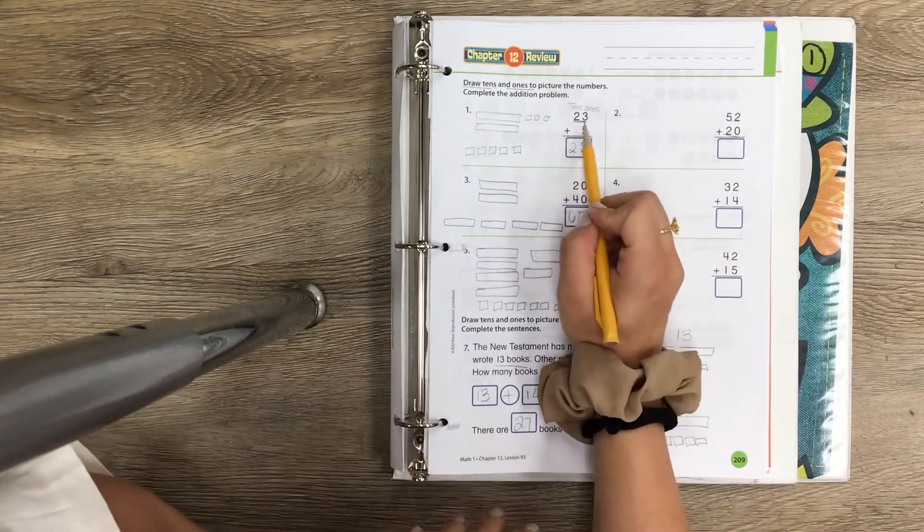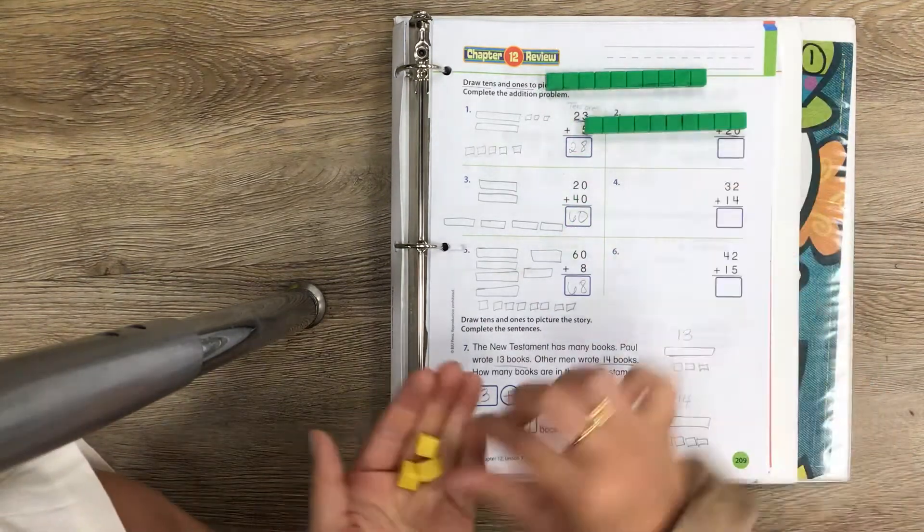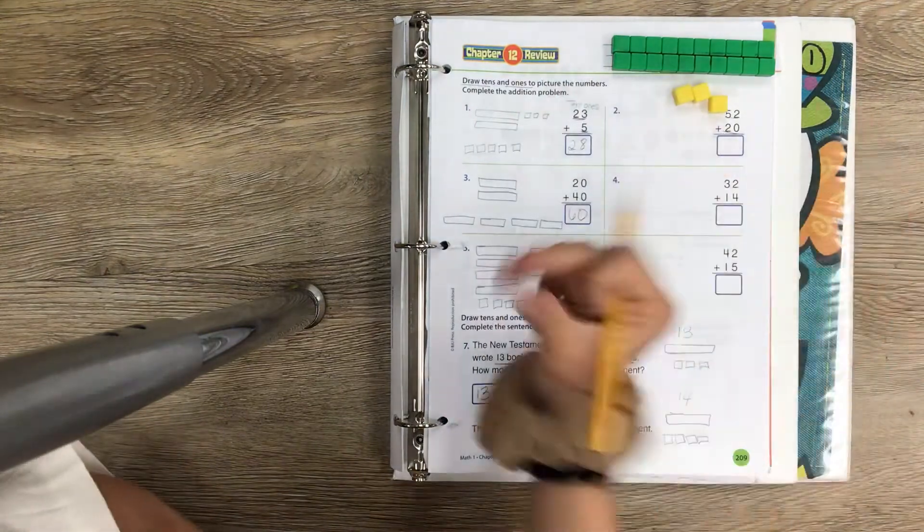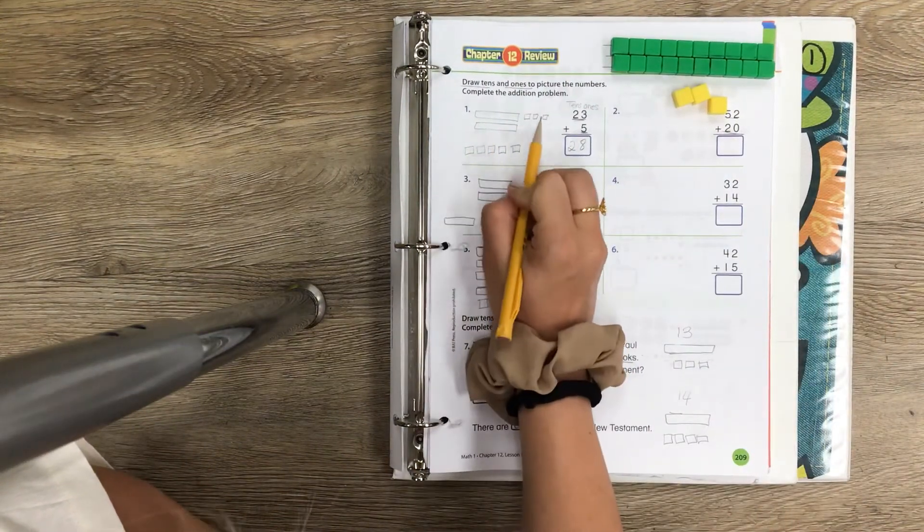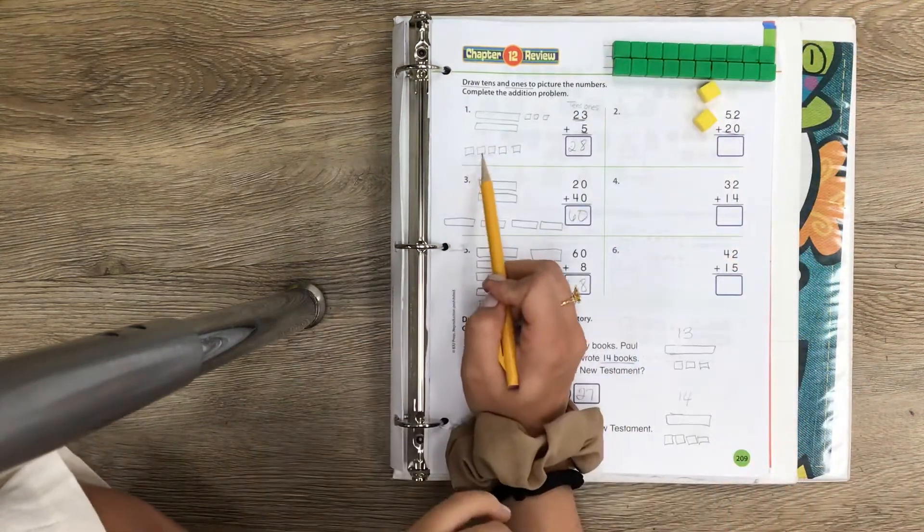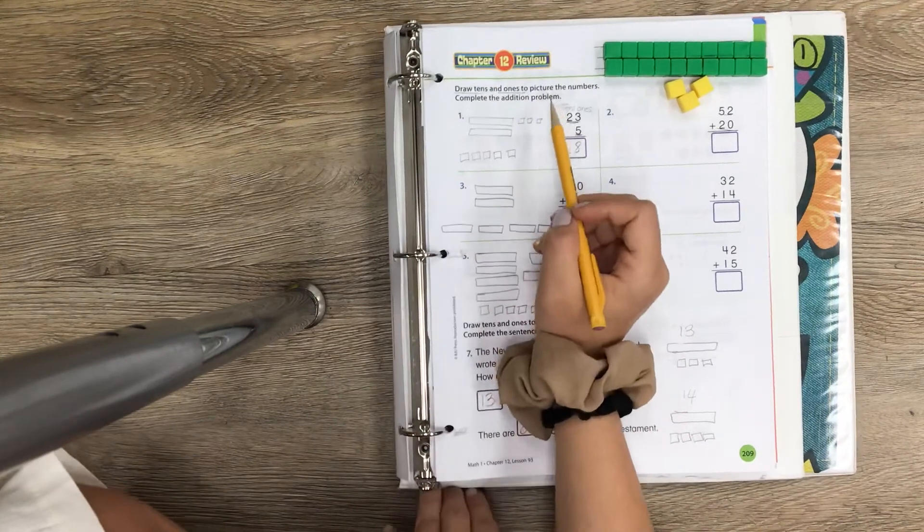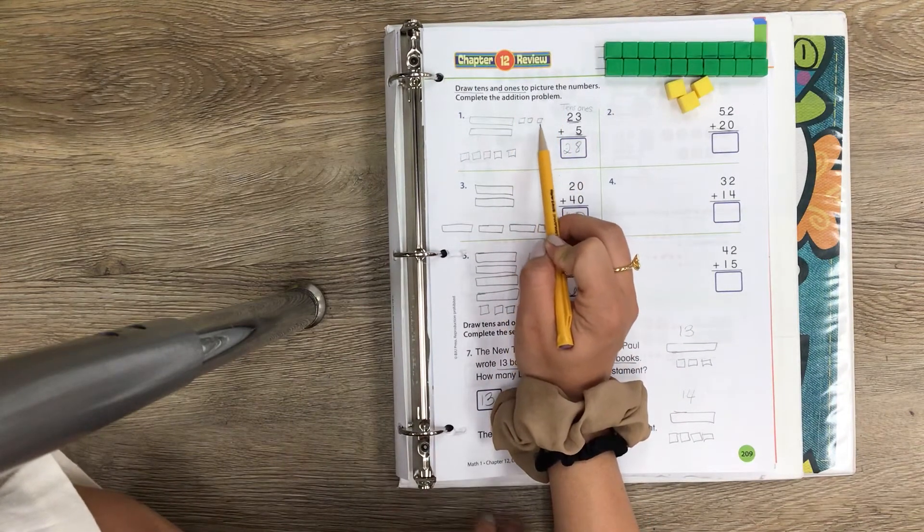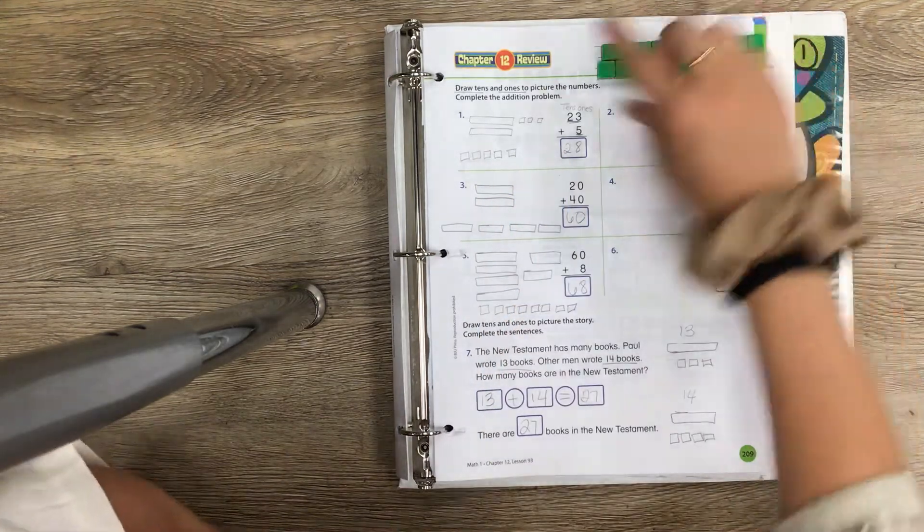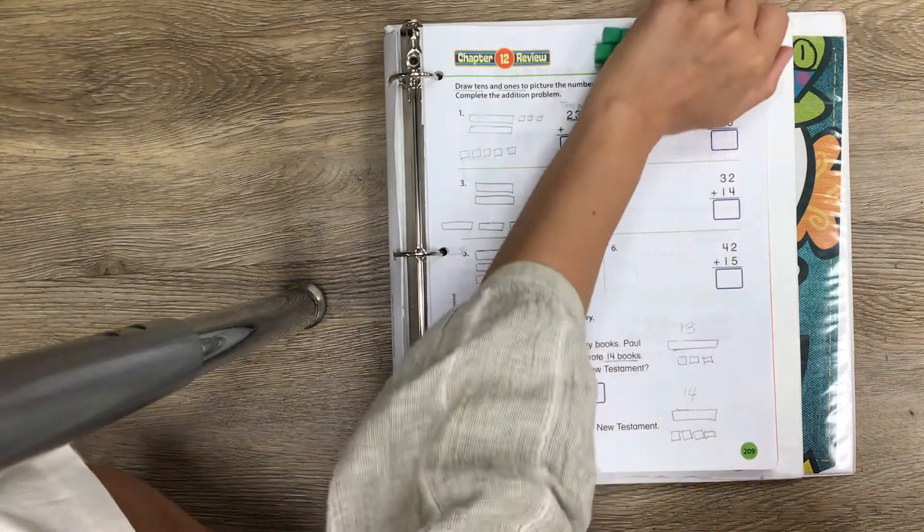So for 23, I drew 23, which is 10, 20, 21, 22, 23, right? But you guys don't have these at home, so you can draw rectangles: 10, 20, 21, 22, 23. Then they wanted us to make 5, which is just five of these little cubes: 1, 2, 3, 4, 5. Then they wanted us to add up all our pictures together, so I got 10, 20, 21, 22, 23, 24, 25, 26, 27, 28. So I drew out my 23, then I drew out my 5, and I added them all together and I got 28.